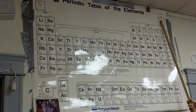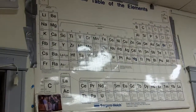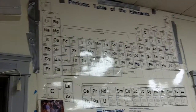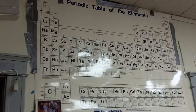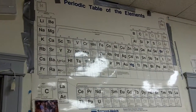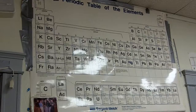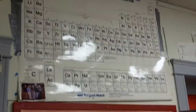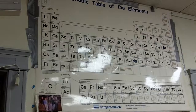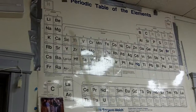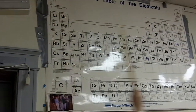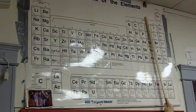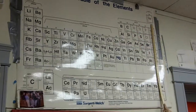Helium's only got two — it's a weird one for the column. Actually, the duet rule sort of explains that. We'll come back to that in a little bit. We can all find out how many valence electrons something has quickly just by seeing which column it's in: one, two, skip, three, four, five, six, seven, eight.